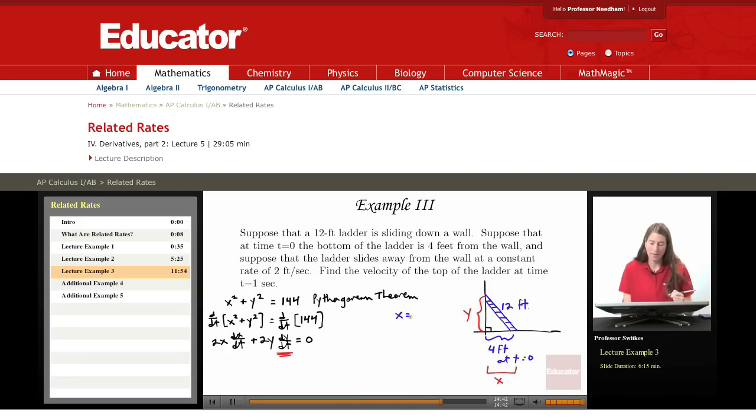x is how far the base of the ladder is from the wall at time, we want to do this at time one. And so at time one, the ladder has gone from being four feet away to continuing its motion away from the wall at a rate of two feet per second. So from time zero to time one, one second has gone by, the ladder has moved out two more feet, making x equals six feet. So this is four feet plus two feet per second times one second, giving us x equals six feet.